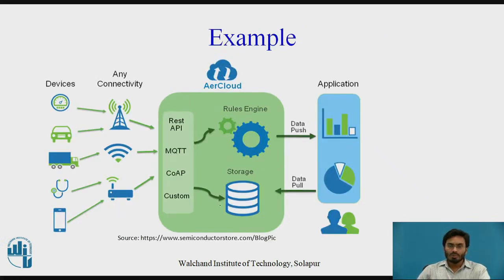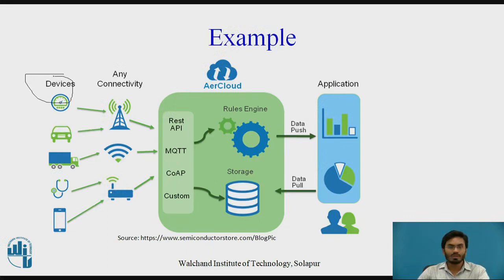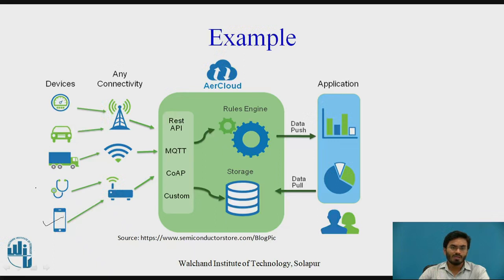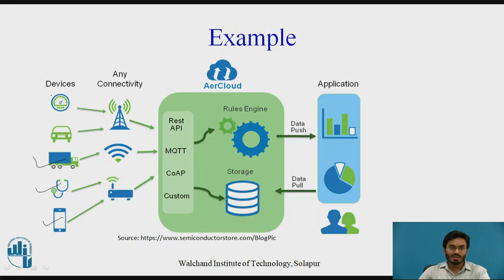To go into more detail, let's look at a small example. You have a few devices — for example, a cell phone, a medical instrument, or a global positioning tracker affixed inside a vehicle. Any of these kinds of things actually compose the devices category.